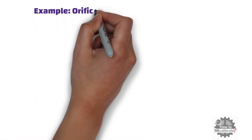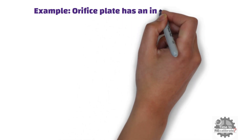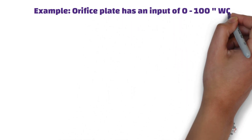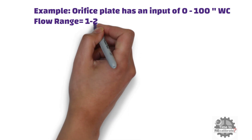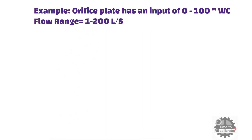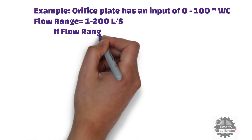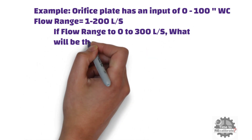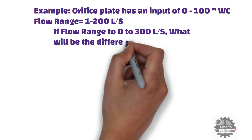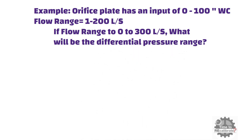In this example, a flow measurement system comprising an orifice plate has an input of 0 to 100 inches water column of differential pressure, representing a flow of 1 to 200 liters per second. If we change the flow range to 0 to 300 liters per second, then what will be the differential pressure range?